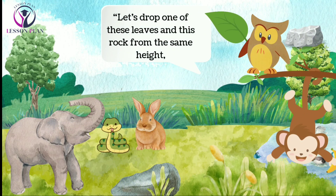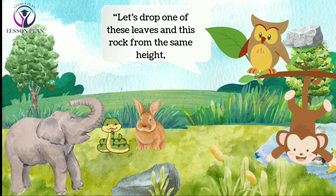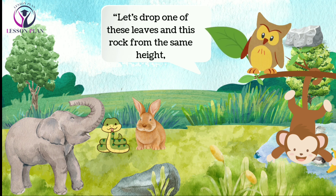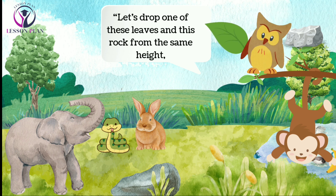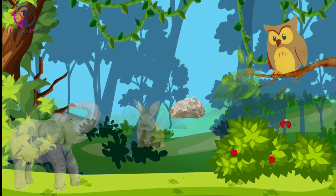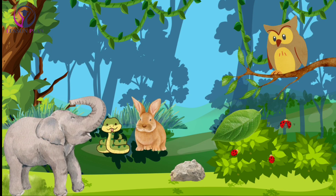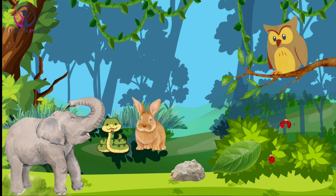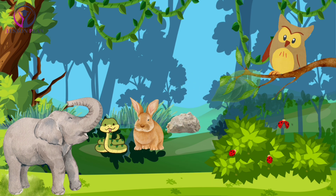"Let's drop one of these leaves and this rock from the same height," Owl suggested, holding up a small rock she had picked up from the ground. The other animals nodded eagerly, excited to see the results. They found a nearby tree to stand on and held the leaf and rock at the same height, then let go at the same time. To their surprise, the leaf fluttered slowly to the ground while the rock fell quickly and hit the ground with a thud.